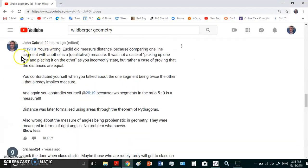But he got as close to perfect as anybody could because he was a pioneer and the very first one to write down all these facts. So I'm coming back to this book in a second. At any rate, then at 19:18, Wildberger claims that Euclid didn't measure distance because comparing one line segment with another is a qualitative measure. So Euclid did measure distance. And it was not a case of picking up one line and placing it on the other as Wildberger incorrectly states, but rather a case of proving the distances are equal.